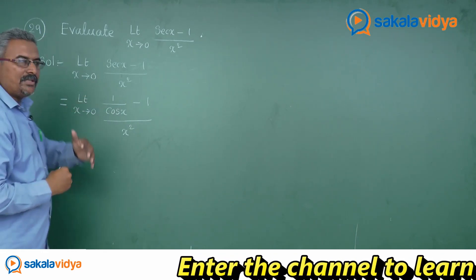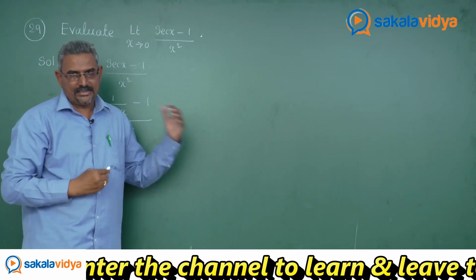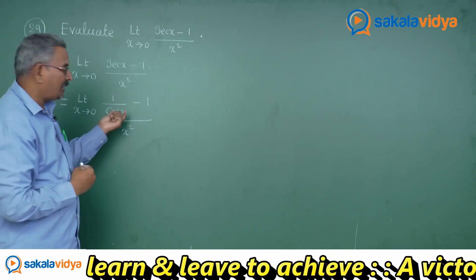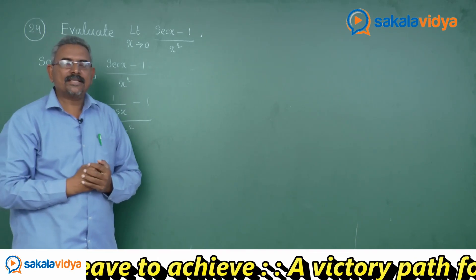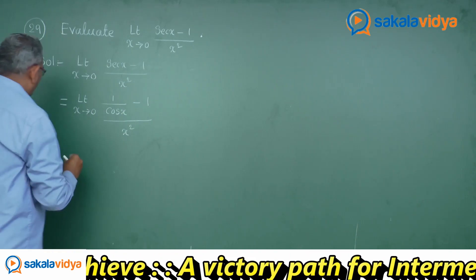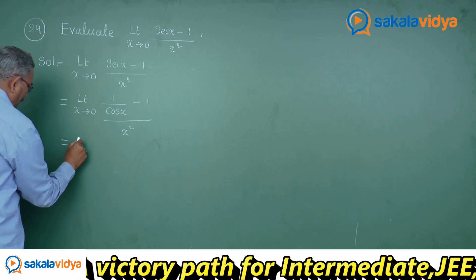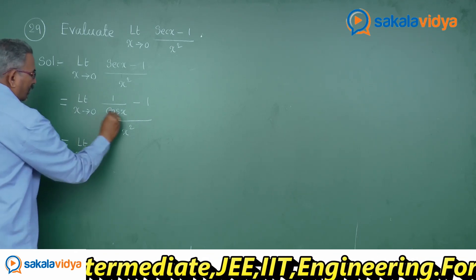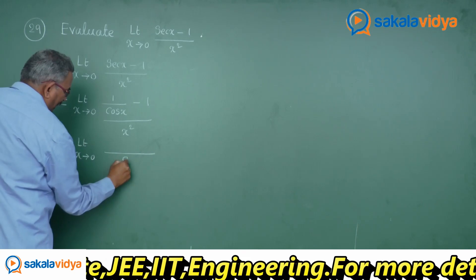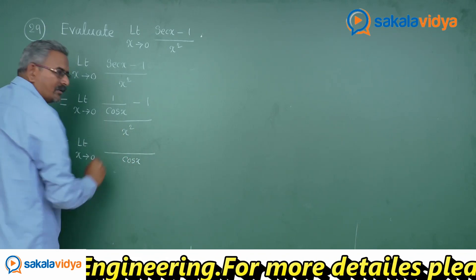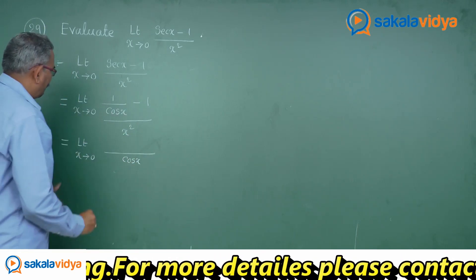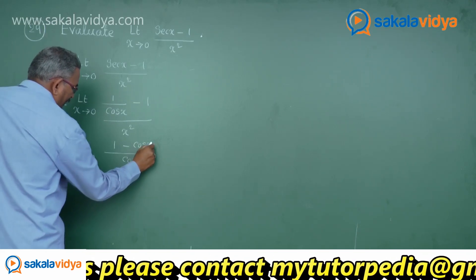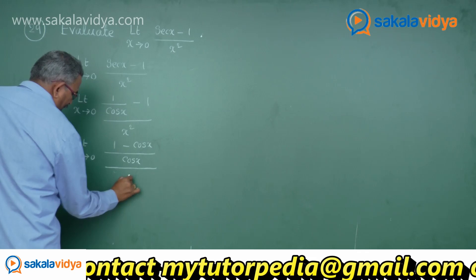First we need to simplify the numerator. In order to simplify the numerator, we obviously take cos x as an LCM. This equals to limit x tends to 0, and it can be simplified: 1 minus cos x divided by cos x, divided by x square.